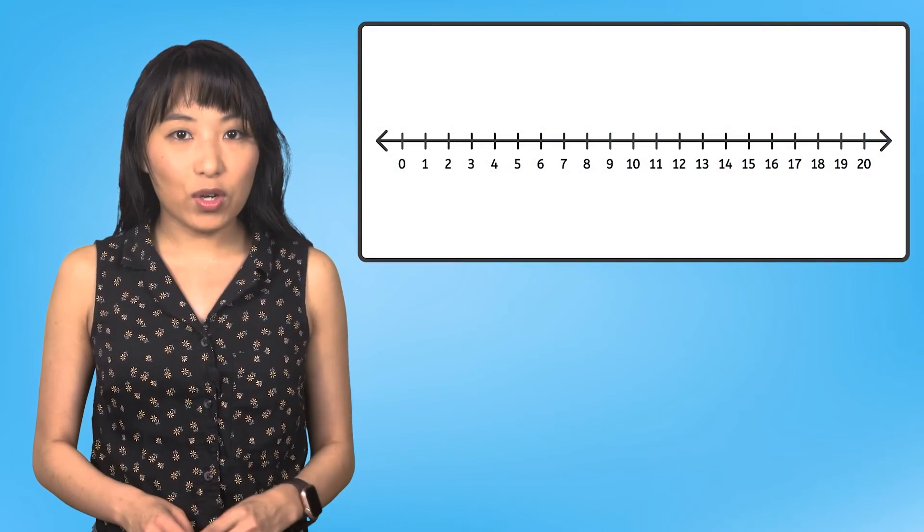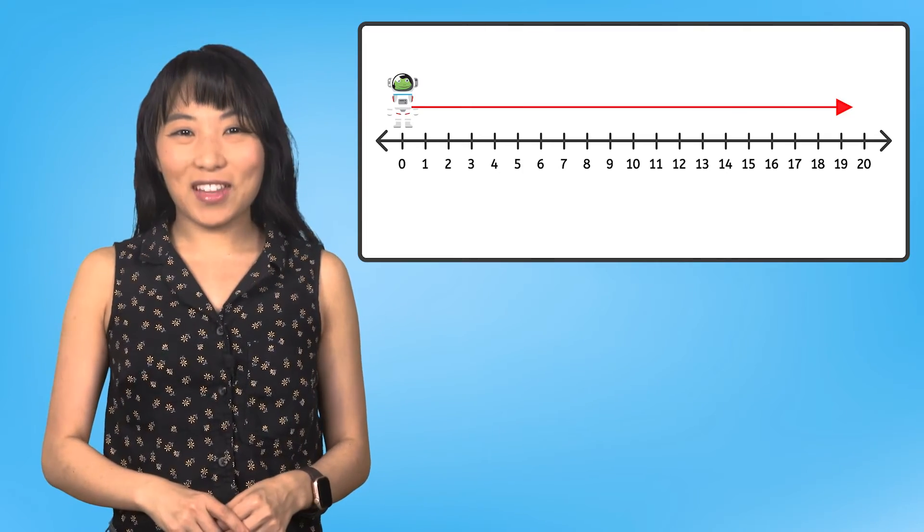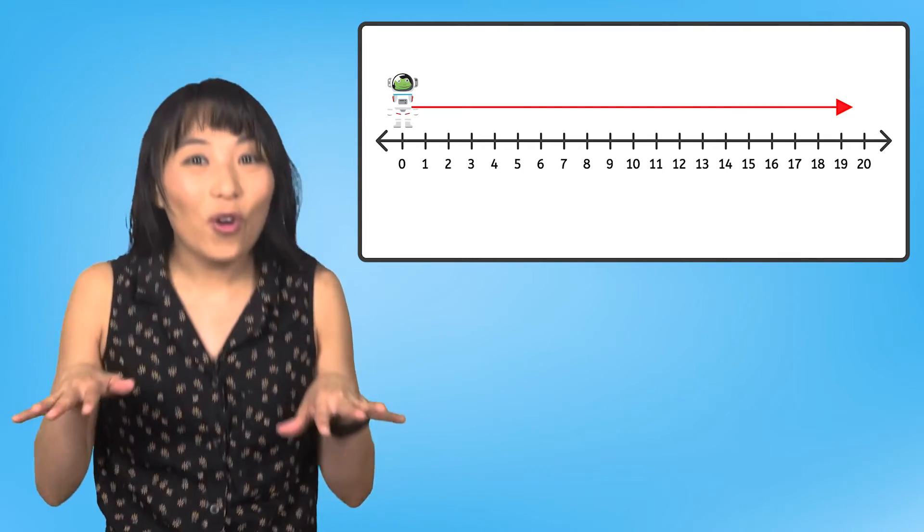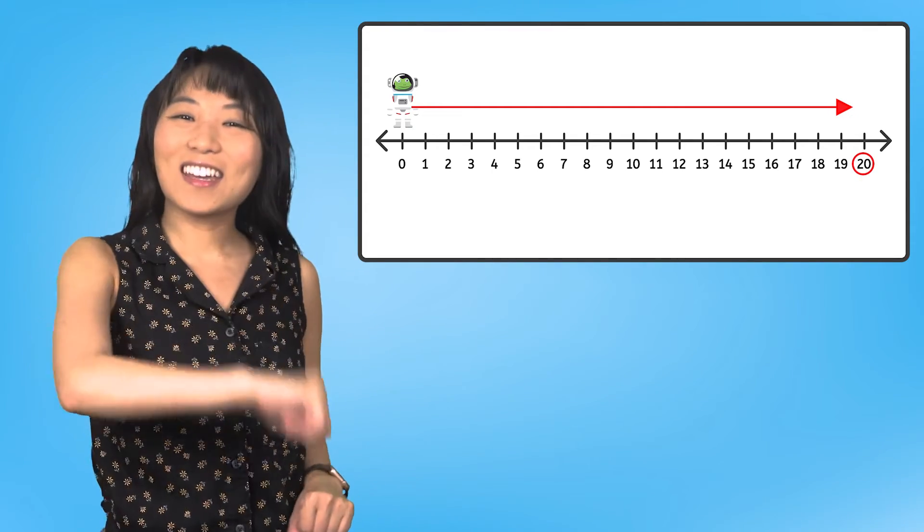This time, we're going to start at zero and count forward along the number line, just like Forward Frog, all the way to 20. Here we go!